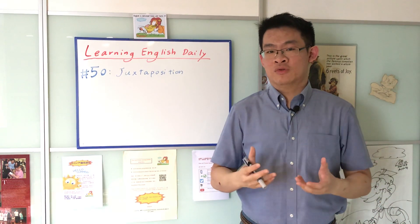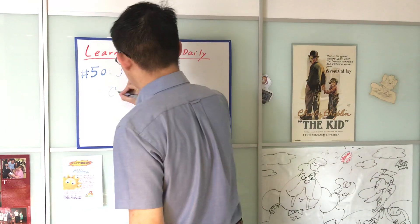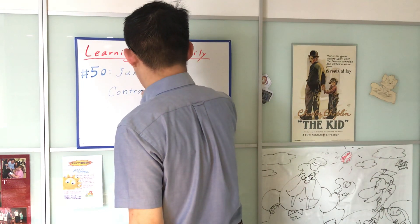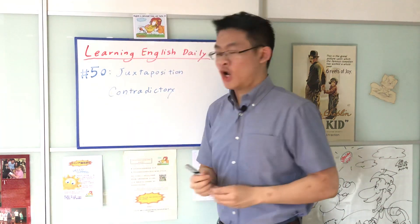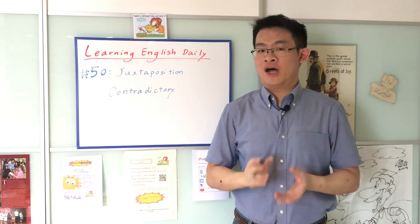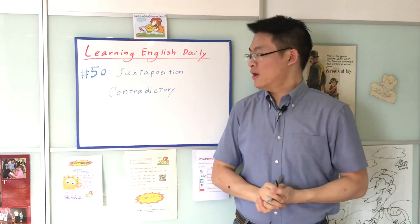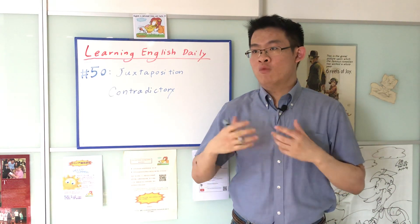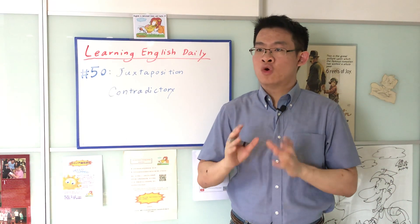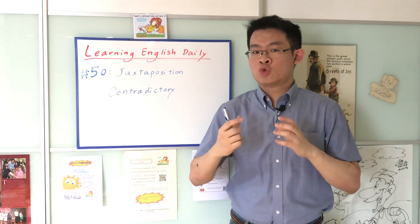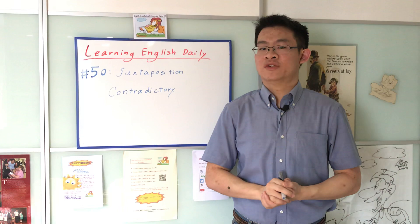Another word that is similar to the word juxtaposition is the word contradictory. For example, in the very famous book Charlie and the Chocolate Factory, there was a section in which Willy Wonka introduced the children to something called square sweets that look round. And that is of course something that is contradictory.